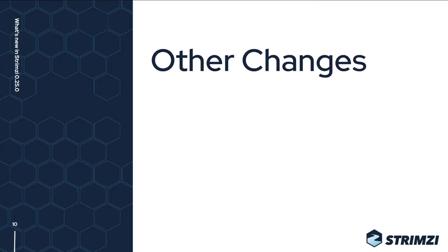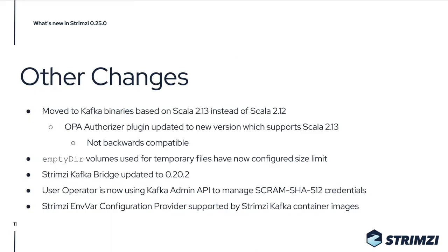There are also many other changes in 0.25. One is that we are now using Kafka binaries based on Scala 2.13 instead of Scala 2.12 — Scala 2.13 is the version recommended by the Apache Kafka project itself. As part of this update we also had to update the version of the Open Policy Agent authorizer plugin. The new version has a different interface for the input data sent to the OPA server, which is not backwards compatible, so you may need to update your OPA policies as part of the Strimzi upgrade.